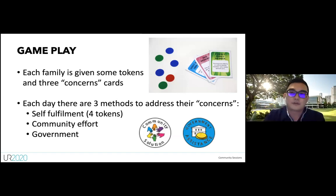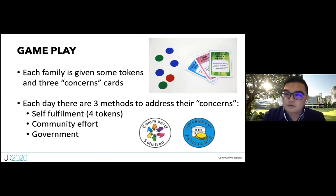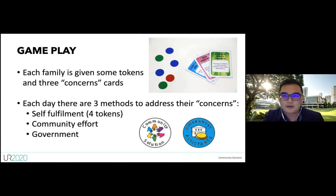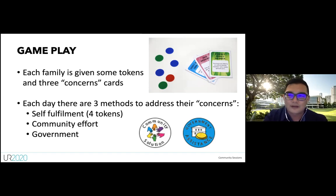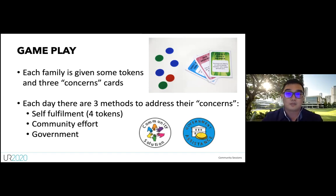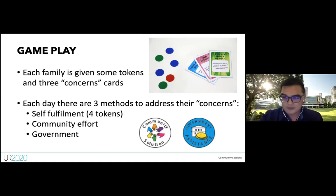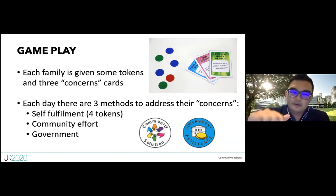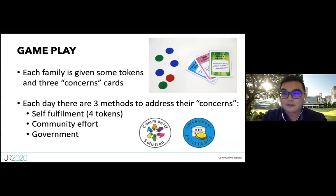There are three ways to address concerns. First, spend four tokens to resolve one of your own concerns individually. Second, through community effort: if all families pool together a predetermined amount — say 11 tokens — the community resolves one concern for everyone. A concern is chosen randomly, and families who have that concern get it resolved.